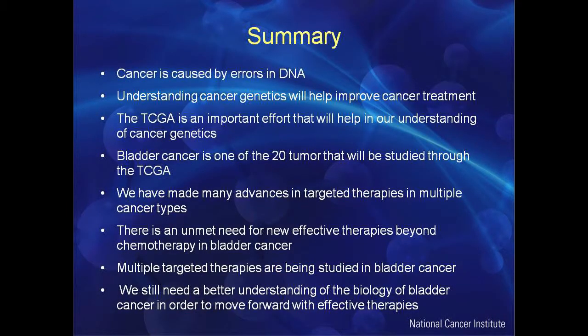In summary: cancer is caused by errors in DNA, and understanding cancer genetics will help improve cancer treatments. The Cancer Genome Atlas (TCGA) is an important effort in our understanding of cancer genetics, and bladder cancer is one of the 20 tumors being studied through the TCGA. We have made many advances in targeted therapies in multiple cancer types, but there is an unmet need for new effective therapies beyond chemotherapy in bladder cancer. Multiple targeted therapies are being studied, but we still need a better understanding of the biology to move forward with effective therapies.